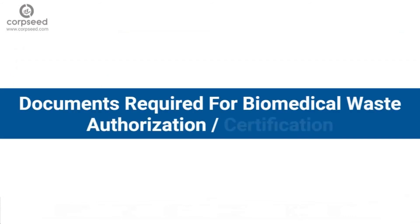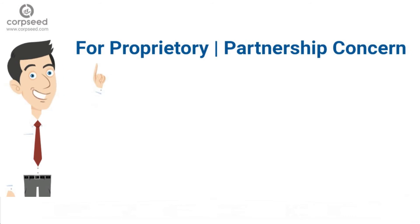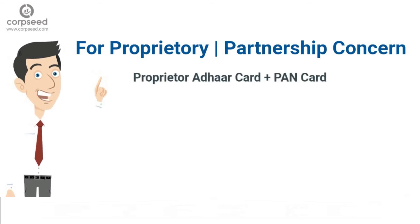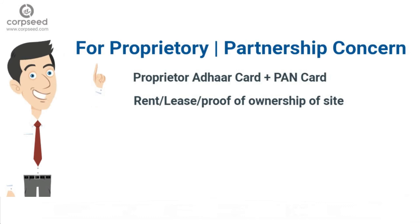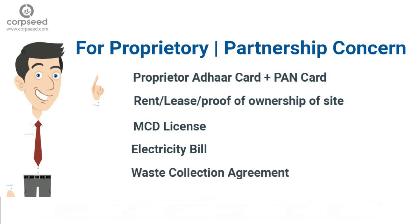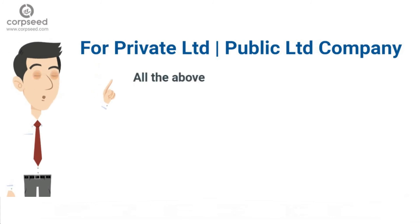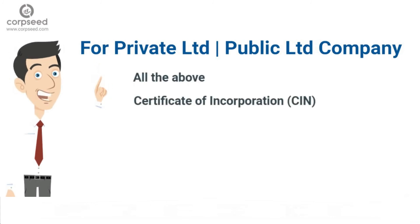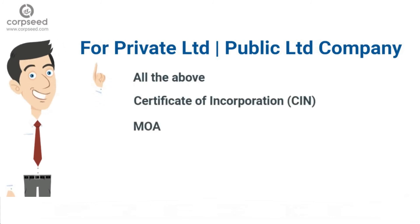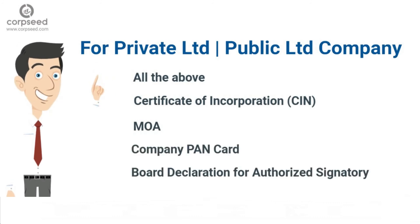Documents required for Biomedical Waste Authorization: For a Proprietary or Partnership Concern — Proprietor's ID card, PAN card, Rent/Lease or Proof of Ownership of site, MCD License, Electricity Bill, and Waste Collection Agreement. For a Private Limited or Public Limited Company — all the above plus Certificate of Incorporation (CIN), MOA, Company PAN card, Board Declaration, and Board Declaration for Authorized Signatory.